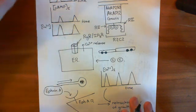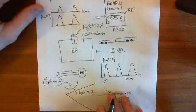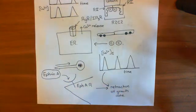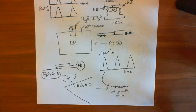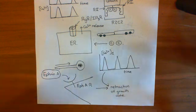That's pretty much all I've got to say on ephrin A, axon growth cones, and retinal ganglion cells. These calcium and cyclic AMP oscillations are extremely important in producing retraction of the axon growth cone in response to ephrin A.